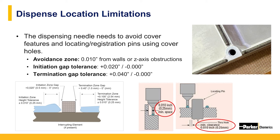When z-axis obstructions appear, you can use a longer needle to work around some features. However, the cost of changing needles for obstructions may lead to slower flow and longer dispense rates, adding some costs. A simple housing or cover design will often not cause these issues.